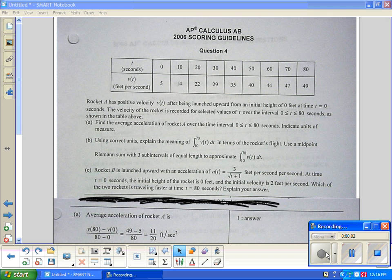2006 scoring guidelines for the AP Calc test. Question 4. Note, calculator gives you a table. You're thinking Riemann sums, you're thinking mean value theorem, you're thinking a whole bunch of things.